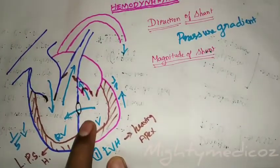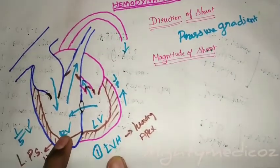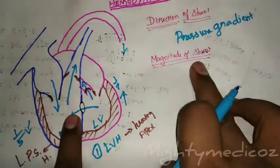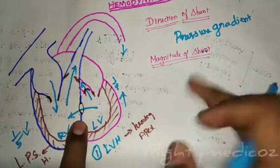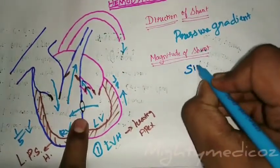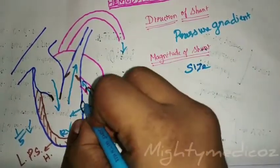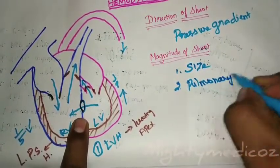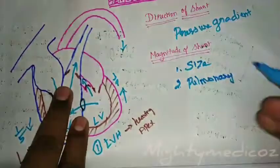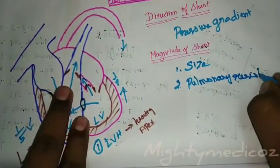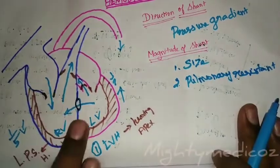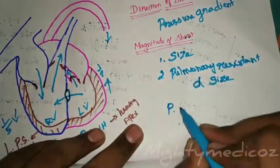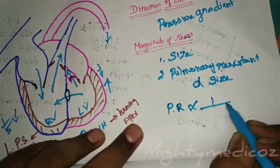The magnitude of the shunt from left ventricle to right ventricle depends on the size of the defect and on pulmonary resistance. In the fetal heart, there is a high pulmonary resistance. The relationship between pulmonary resistance and the size of the defect determines how much blood shunts.